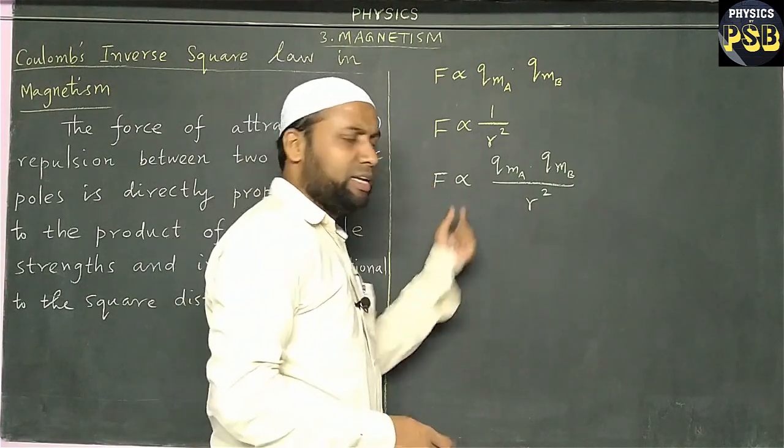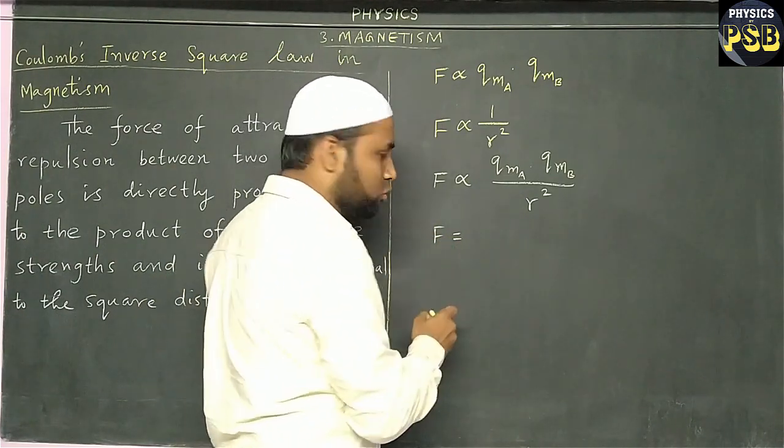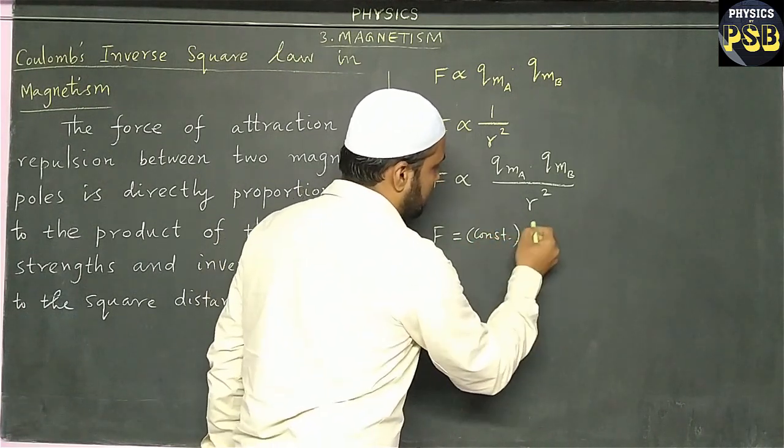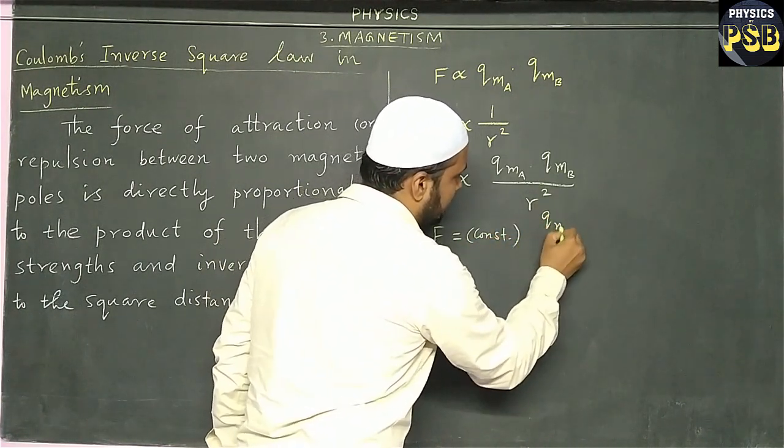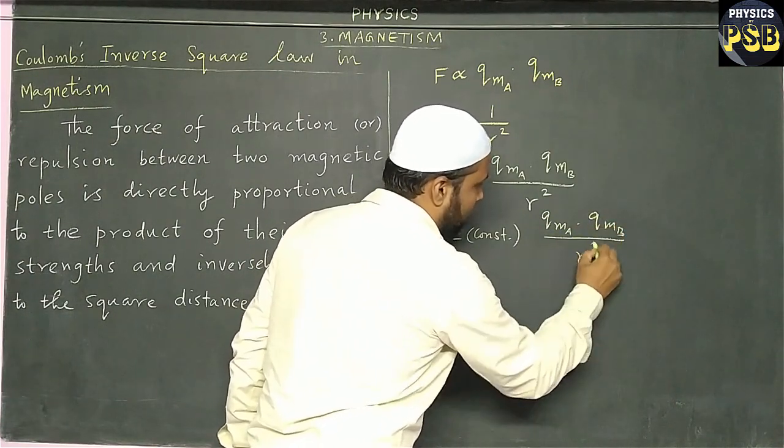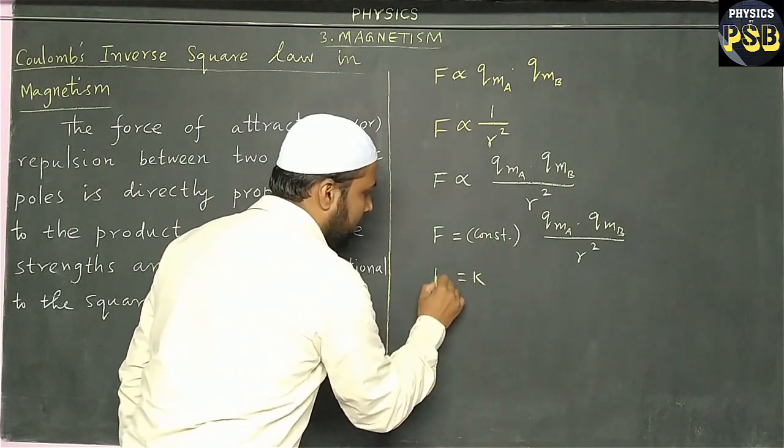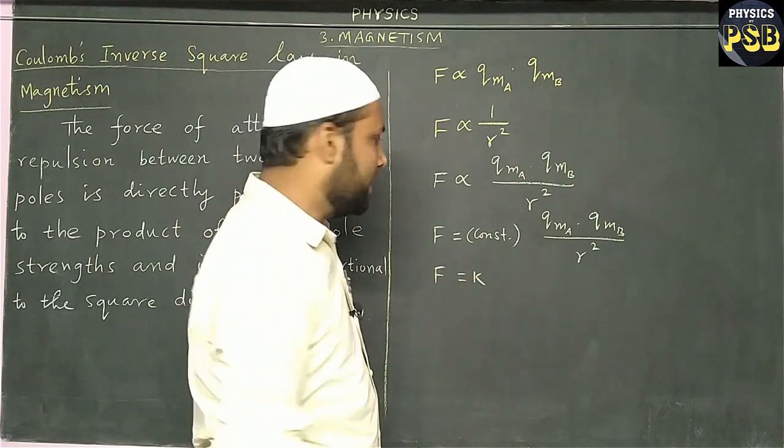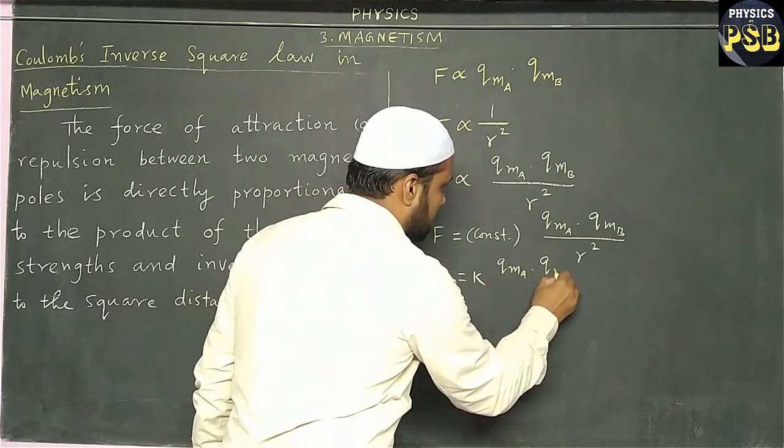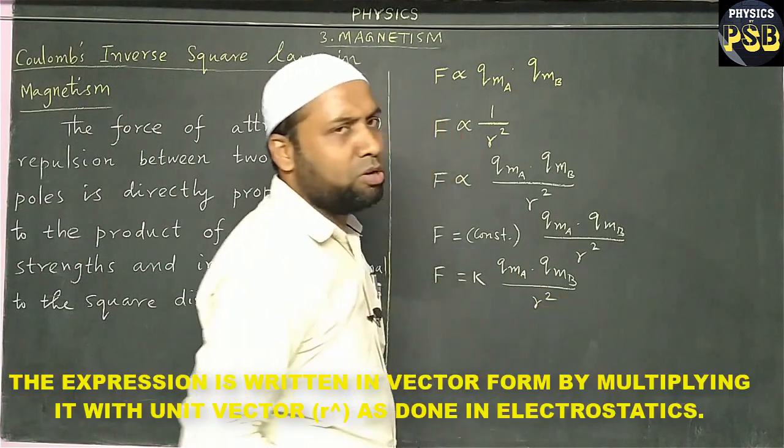Here, we have a proportionality. When we remove this, we include a constant along with equal to sign. And we get the same thing here: q_m,b upon r square. Then, I name this constant as k. Here, k is a proportionality constant.